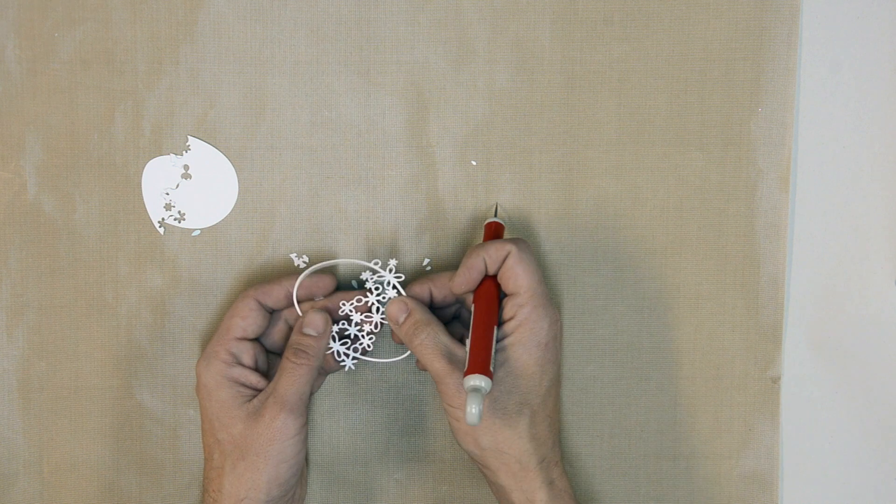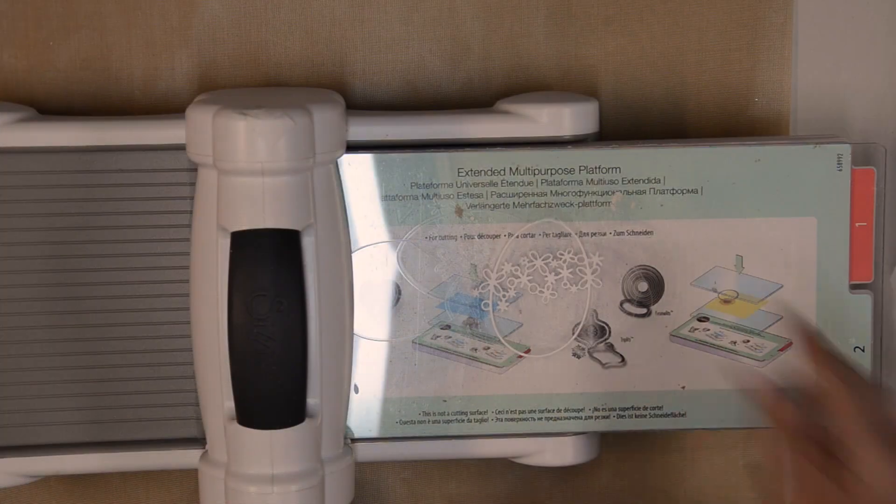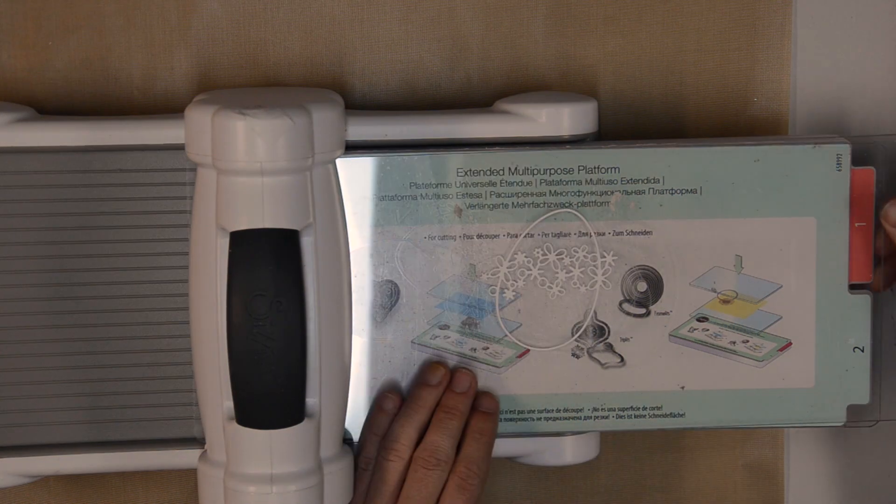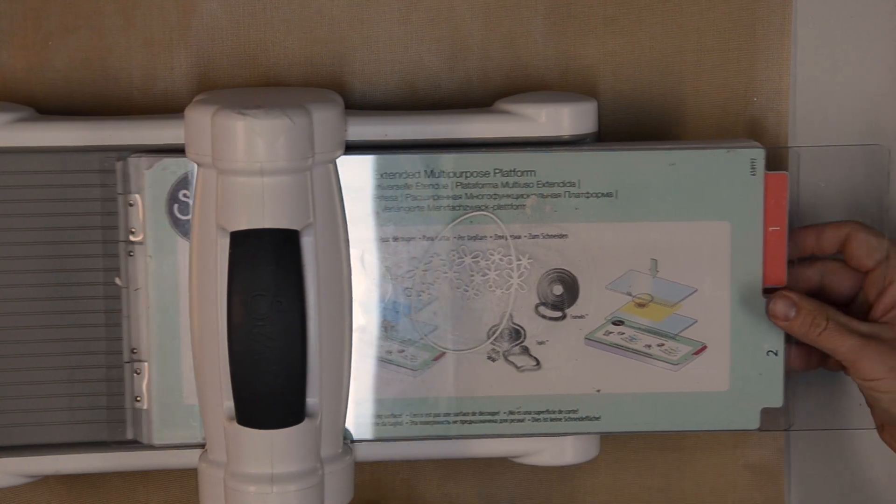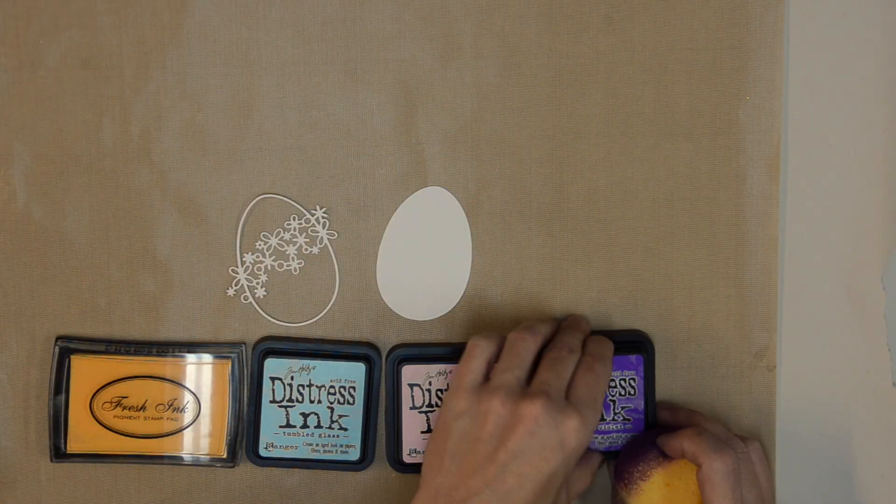A lot of Memory Box dies are very delicate, so a trick I've learned after removing extra pieces is to flatten it back out by just running the die cut right back through my die cut machine. Just put it between the plates, run it through, and it's nice and flat and ready to work with.